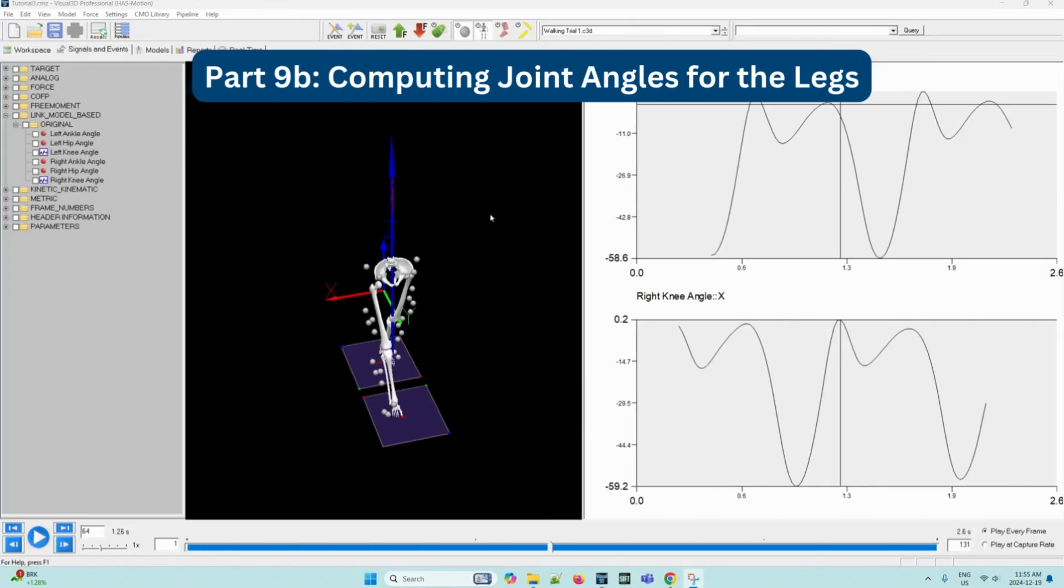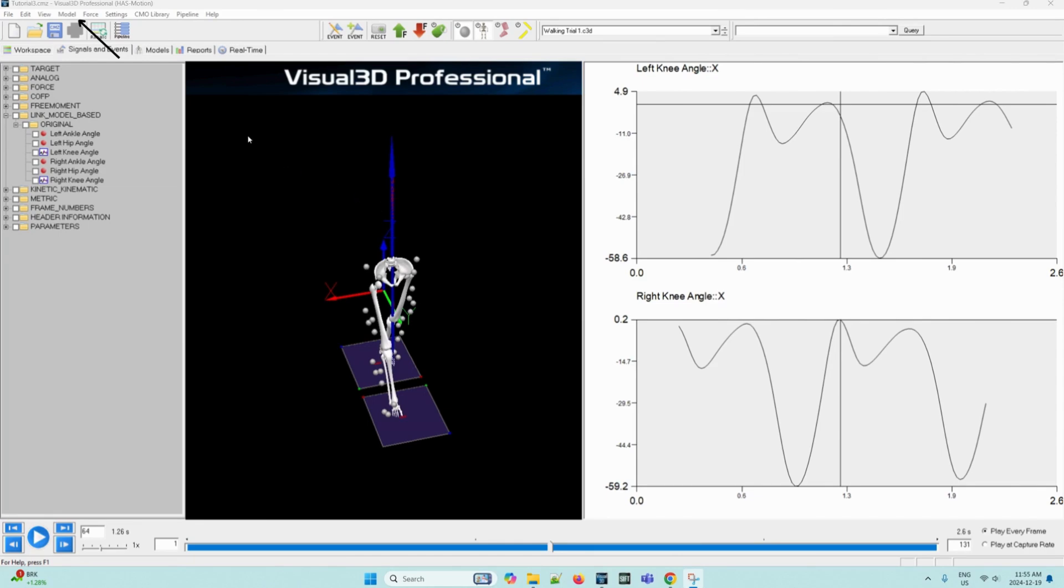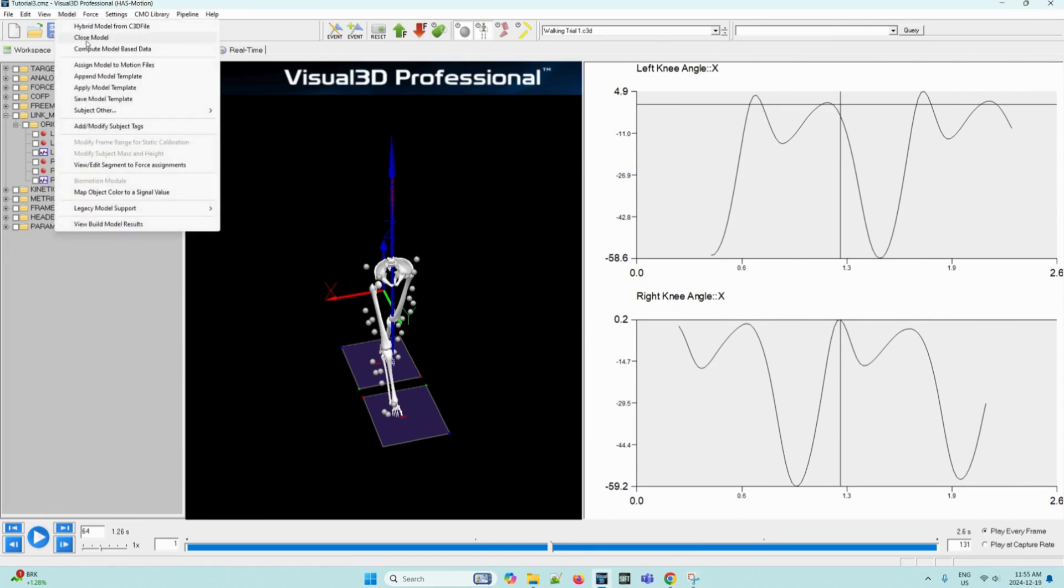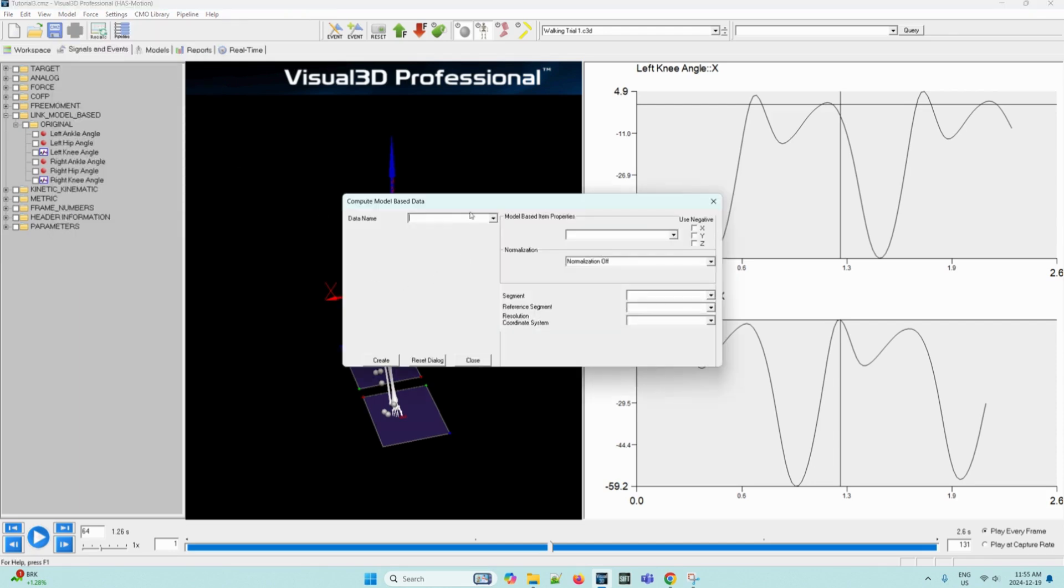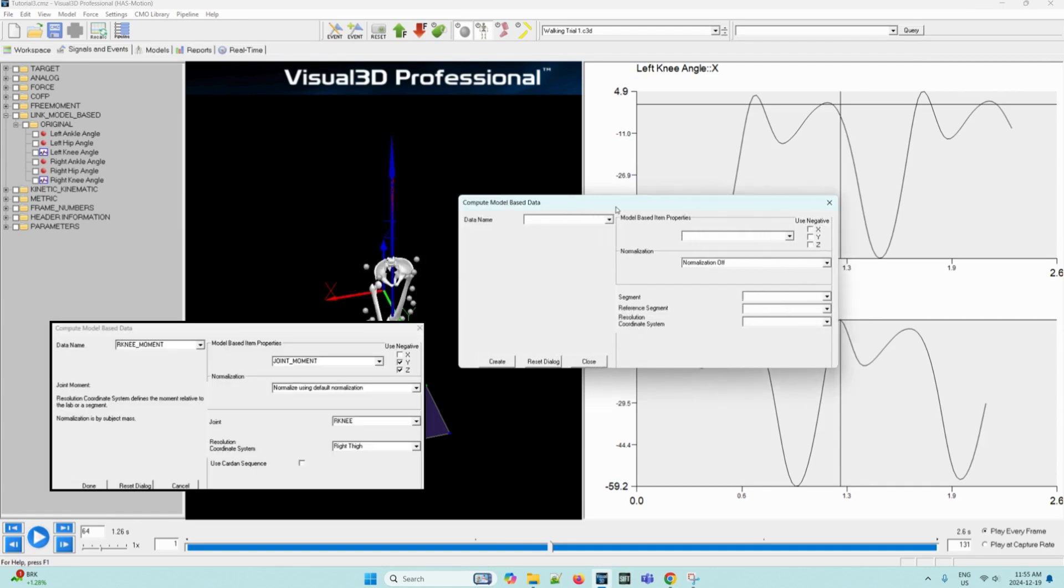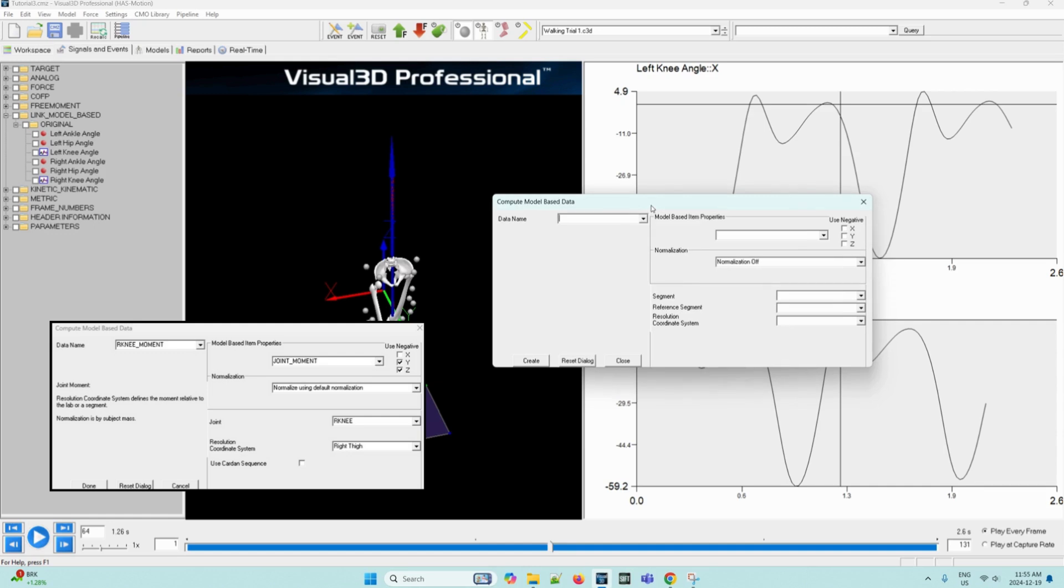We can then navigate back to the Visual 3D application to create the net joint moment for the right knee. So we can navigate to the model drop down menu and then once again select compute model based data in order to open the same dialog box. We can reference the image which contains one definition of the right knee moment. So in this case, the data name box can be filled out as r knee underscore moment. In the model based item properties drop down, we can select joint underscore moment this time, and then we can also check the use negative checkbox for the Y and Z signals.